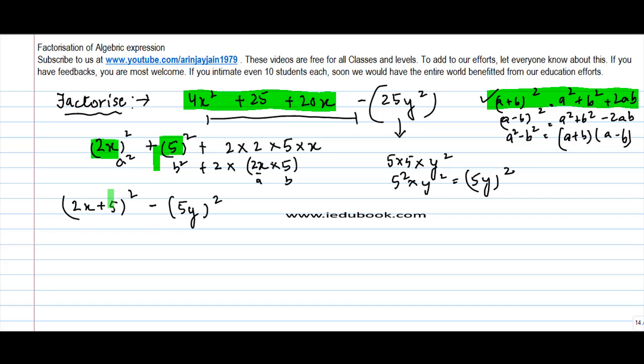Now if I look a little more carefully, what do I get? I get this square minus this square which is what? a square minus b square. Wherein in this revised equation a is equal to 2x plus 5 and b is equal to 5y.